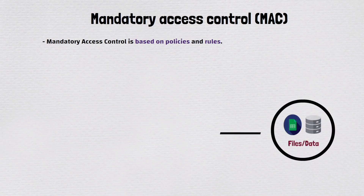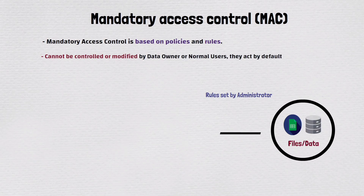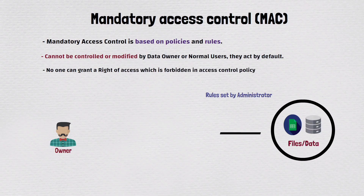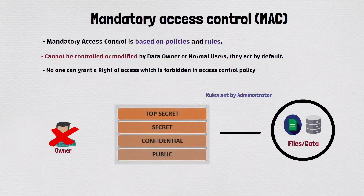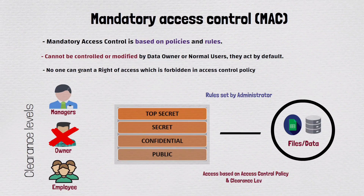On the other hand, mandatory access control is based on policies and rules set by administrators rather than individual users. Mandatory access control credentials cannot be controlled or modified by a normal user or data owner. They act by default — no one can grant a right of access which is forbidden in the access control policy. Mandatory access control assigns labels or levels of sensitivity to both users and resources, and access decisions are made based on these labels and predefined rules. For example, in government organizations, certain classified information may only be accessible to individuals with the appropriate security clearance level, regardless of their personal discretion.